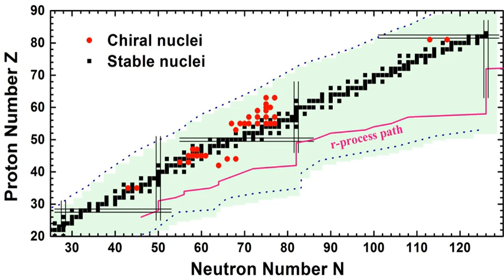is a set of nuclear reactions that in nuclear astrophysics is responsible for the creation of approximately half the abundances of the atomic nuclei heavier than iron, usually synthesizing the entire abundance of the two most neutron-rich stable isotopes of each heavy element.